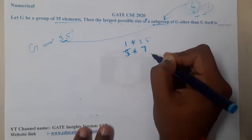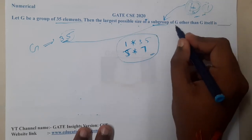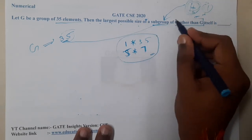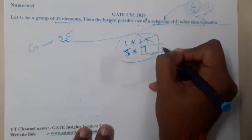These are the only two possibilities. They clearly told that G other than G itself, so basically this 35 is not allowed. So the next maximum is 7. So 7 will be the correct answer.